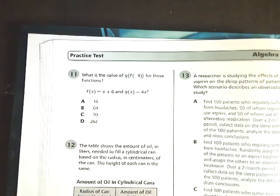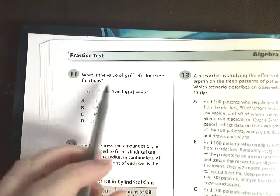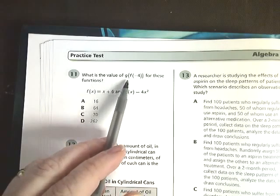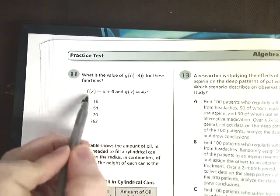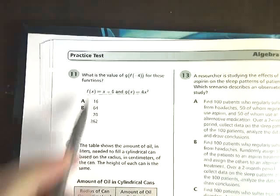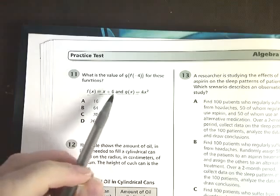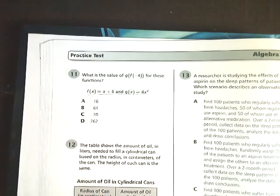Okay, this is question 11 on the Algebra 2 EOC. It says, what is the value of g of f of negative 4 for these functions? And then you've got these two functions here. f of x is x plus 6, and g of x is 4x squared.